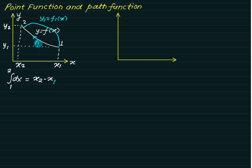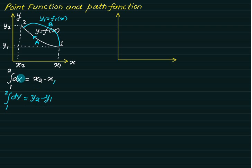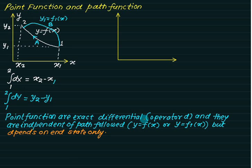Whether we move from 1 to 2 via path A or via a different function path B, the calculation of the integral of dx does not change — it is still x2 minus x1. Similarly, integrating dy from 1 to 2, whether via path A or path B, always gives y2 minus y1. When the integral value is independent of the path followed and depends only on the start state and end state, such functions are called point functions. They are exact differentials and are represented by the operator d.